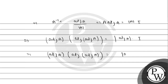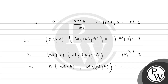Determinant of adjoint of A equals determinant of A to the power x minus 1. Adjoint of a matrix — here we have an order x matrix. So if we operate A into adjoint of A, then here we have determinant of A to the power x minus 1 into A.